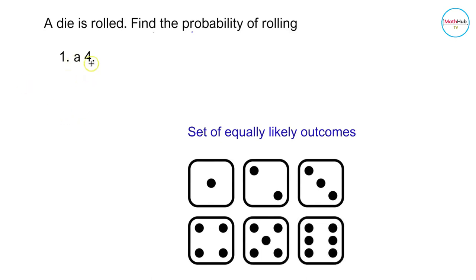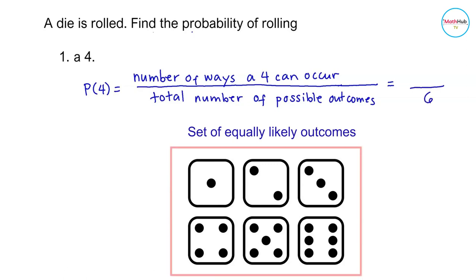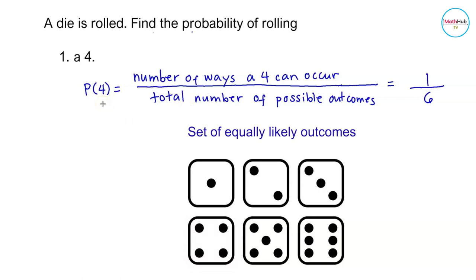The formula to find the probability of rolling a 4 is given by the number of ways a 4 can occur divided by the total number of possible outcomes. The total number of possible outcomes is equal to 6. Looking at the set of equally likely outcomes, there is only one 4. Therefore, the number of ways a 4 can occur is equal to 1, so the probability of rolling a 4 is equal to 1/6.